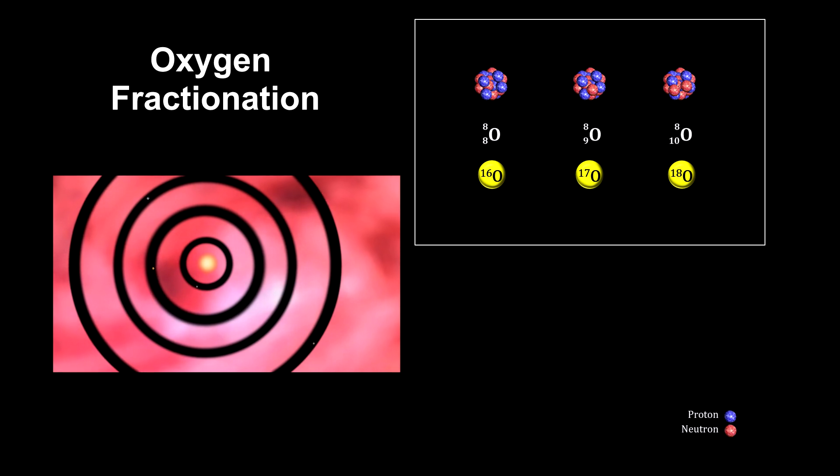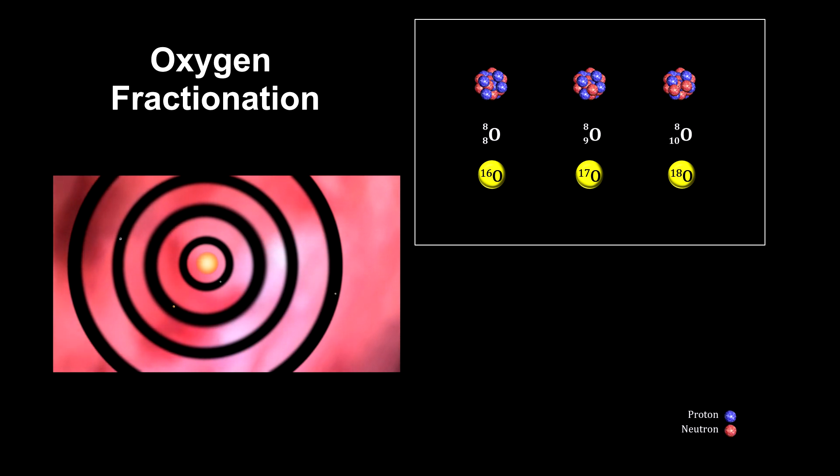With modern mass spectrometers, we can accurately count atoms with different masses even if the difference is only 1 neutron. We'll cover mass spectrometers a bit later in this chapter.